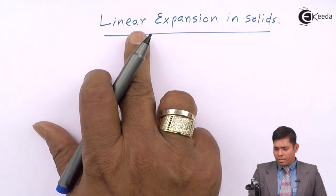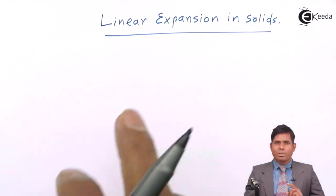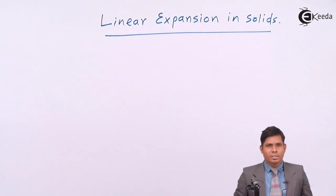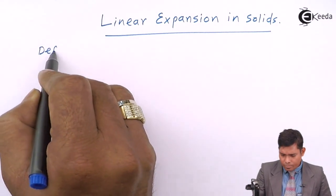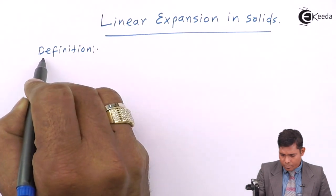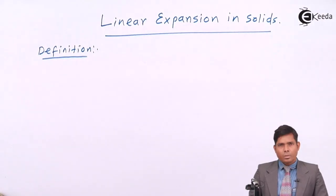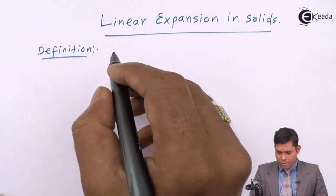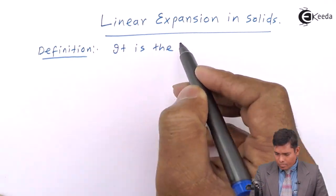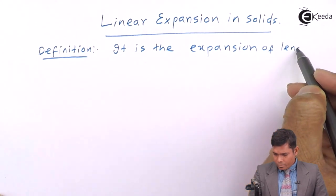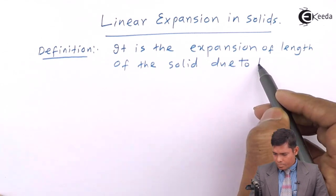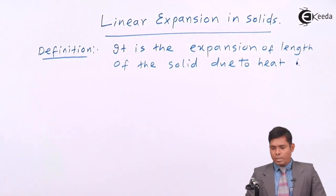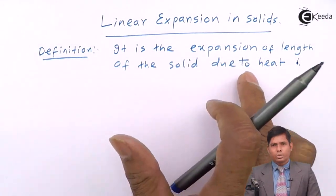In this case, we will discuss only about linear expansion in solids. We will consider a one-dimensional object and see how the dimension increases — how that length increases. Linear expansion is the expansion of length of a solid due to heat.